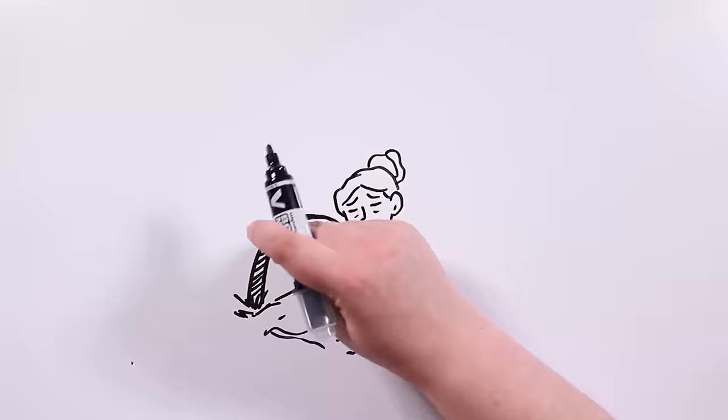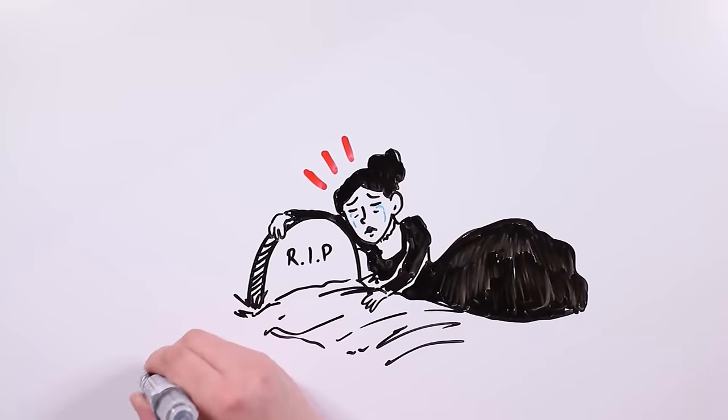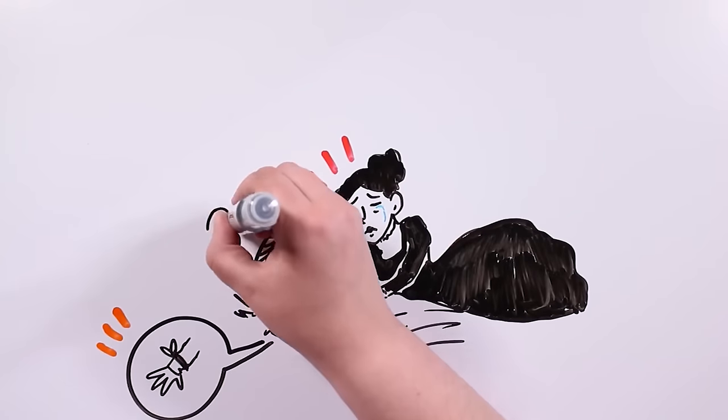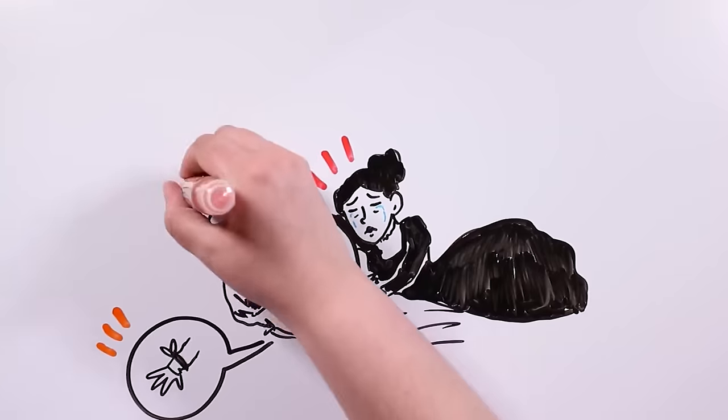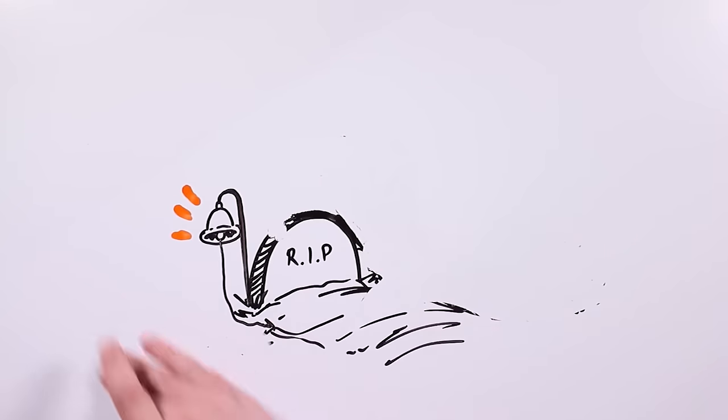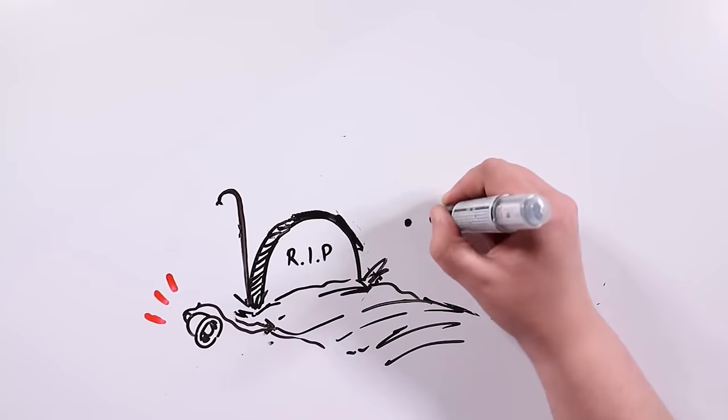Her mother, devastated, didn't want to leave the grave. So her husband tied a thread to Mary's cold wrist and attached it to a bell that hung outside. The next morning, when they returned, they found the bell lying on the ground.